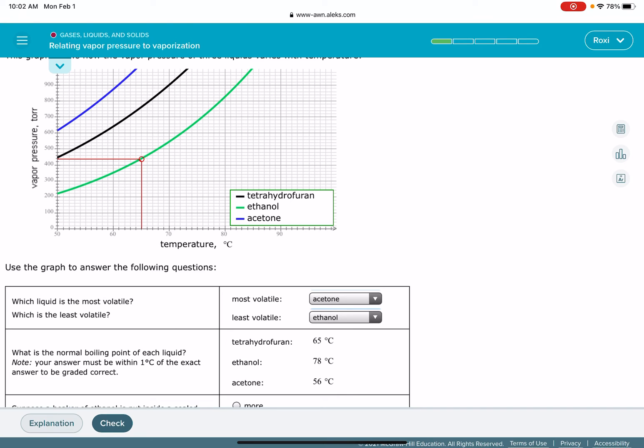So what that means at 65 degrees C, it means that ethanol likes to have 440 torr of gas up above the surface of the liquid. So we're going to keep that in mind. At 65 degrees C, ethanol wants to have 440 torr of gas.